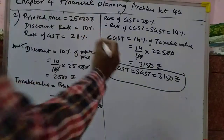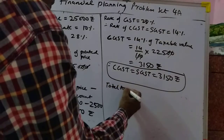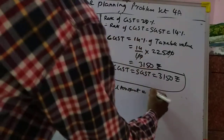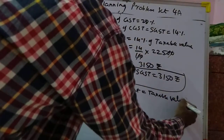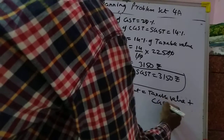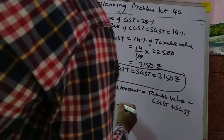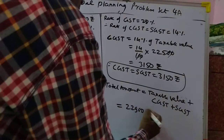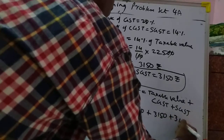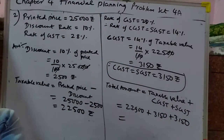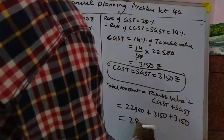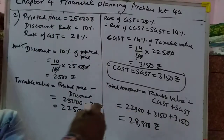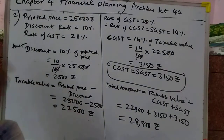Now we want to find the total amount. Total amount is equal to taxable value plus CGST plus SGST: 22,500 plus 3,150 plus 3,150. Add it and it will become 28,800 rupees. So this is the total amount.